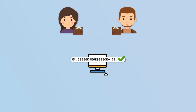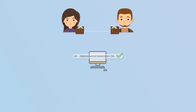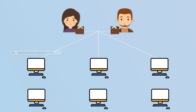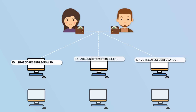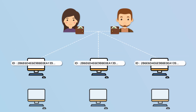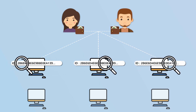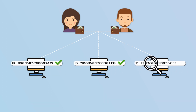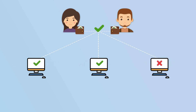But there isn't only one representative node — there are thousands, and a part of them will check your transaction. Some nodes will validate it, and some nodes will reject it, depending on whether your transaction is legitimate or not. They are going to vote.